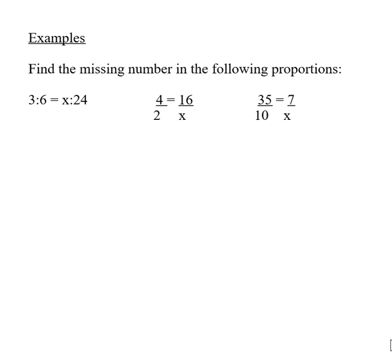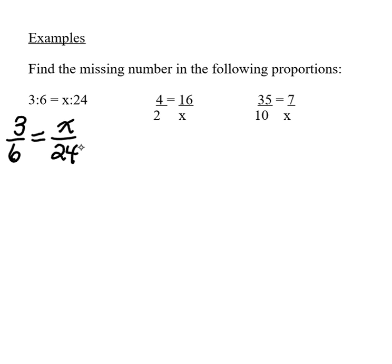Here's a little bit more about proportions. Sometimes you're going to get ratios written in a format like the one on the left-hand side. Whenever you see something written like that, I would always recommend that you turn it into a fraction before you do anything else. It's much easier to see the relationship between the numbers when it's written as a fraction. So right away you can see that 6 times 4 will give you 24, so to get x you need to do 3 times 4, and you will get 12.